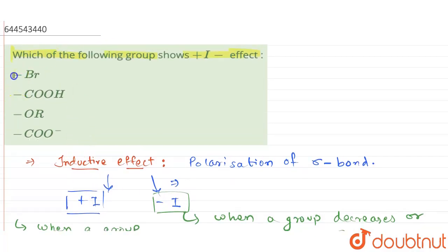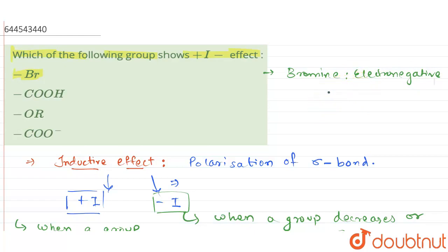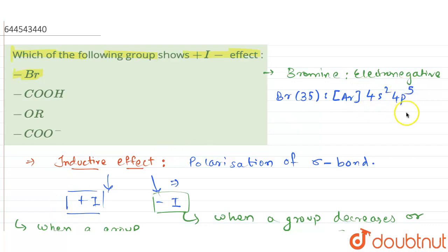Now let's see the options. First, we have bromine. In the case of bromine, bromine is an electronegative atom because it requires only one electron to gain its stable inert gas configuration. The electronic configuration for bromine — atomic number 35 — is argon 4s2 3d10 4p5, so it will take one electron to become 4s2 4p6, which is the inert gas configuration. Therefore, bromine pulls electrons towards itself and shows minus I effect. So this option is incorrect.